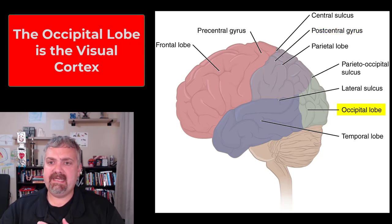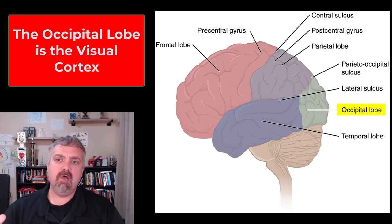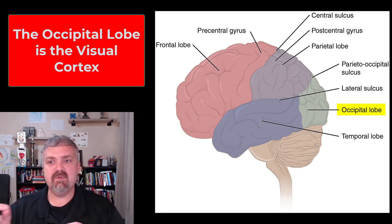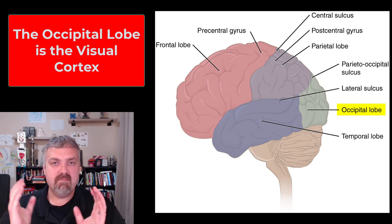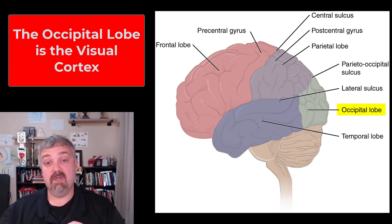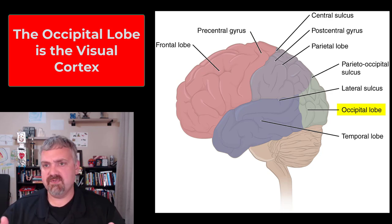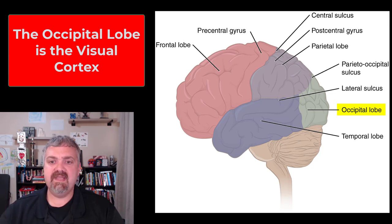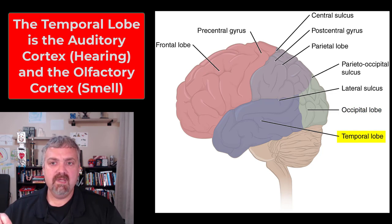When I'm consciously moving my fingers and controlling different parts of my body, that information starts at the precentral gyrus of the frontal lobe. If I'm feeling something like my wedding ring or touching the table, that information is sent to the postcentral gyrus of the parietal lobe. The occipital lobe in the back is separated from the parietal lobe by the parieto-occipital sulcus, and it is where your visual centers are.